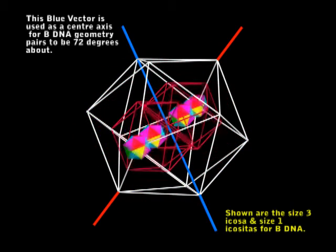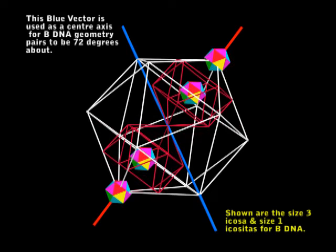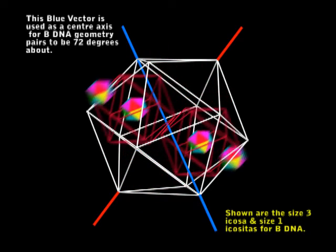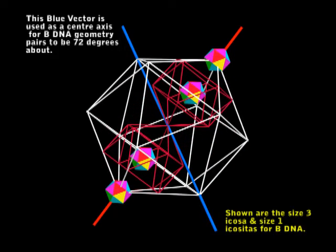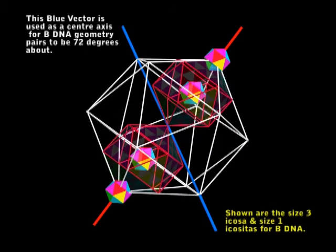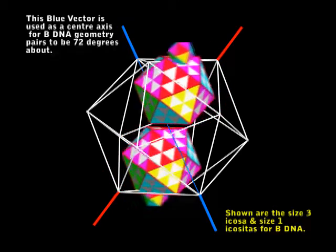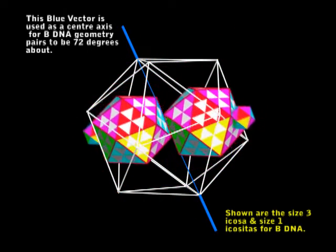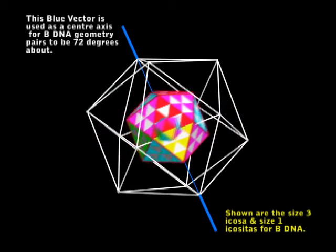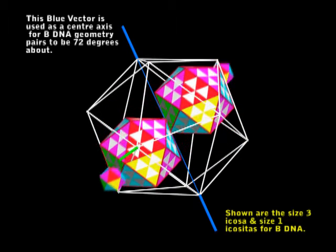This geometry will make five positions 72 degrees about. Now notice the colours on the icositas. They always stay in the same orientation. This is the vector system. This is how we get everything in perfect order.